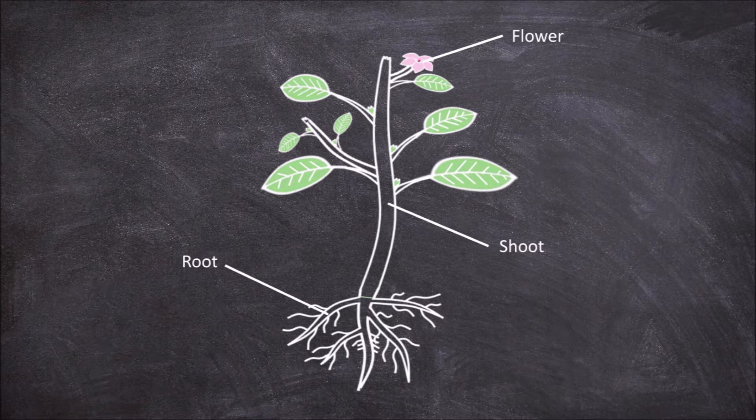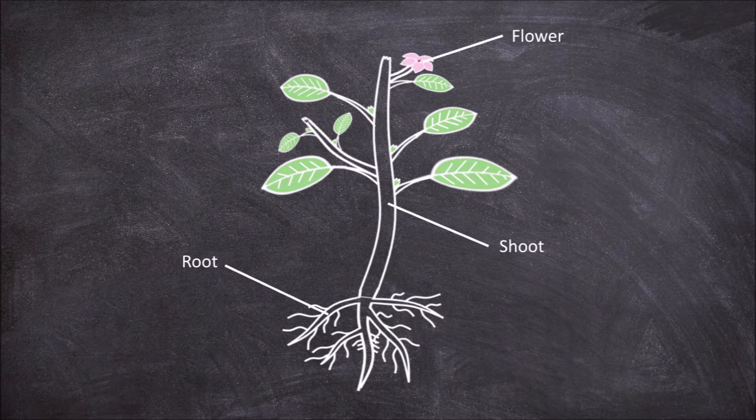Meristems give rise to various plant organs and are responsible for growth in plants. The shoot apical meristem is found at the top of the stem and is responsible for the growth of the stem itself as well as the leaves and the lateral buds.